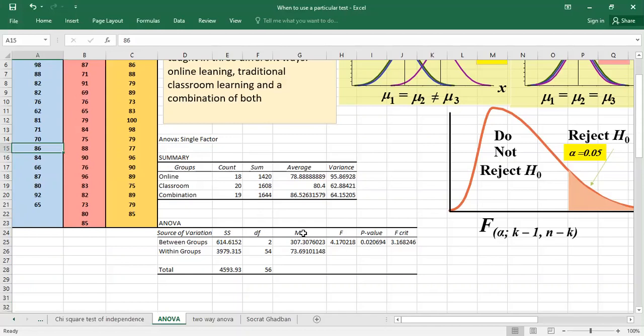Now MS it's the mean square, so we can get it if you want to know more by dividing this number by two and dividing this number by 54 and we get 73.